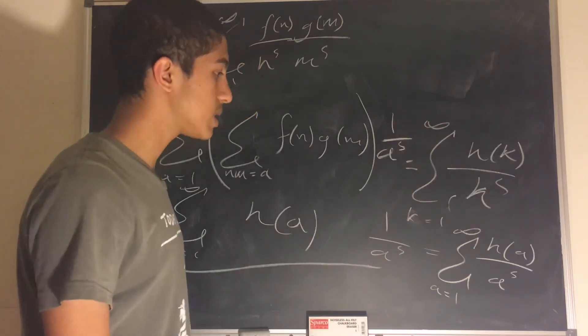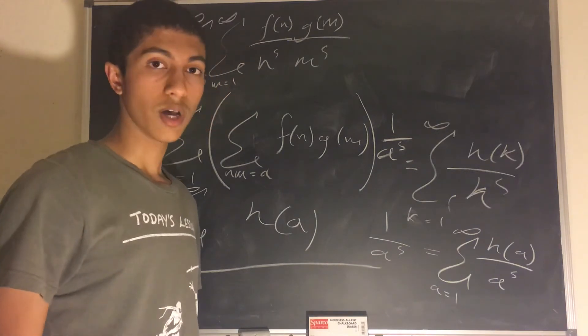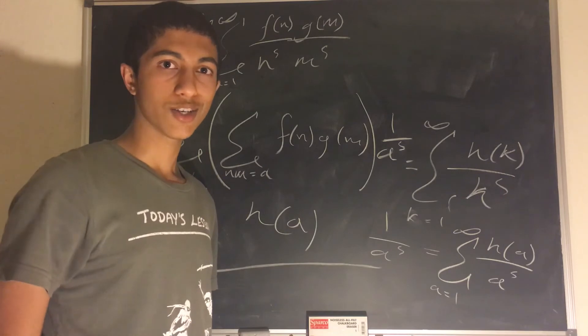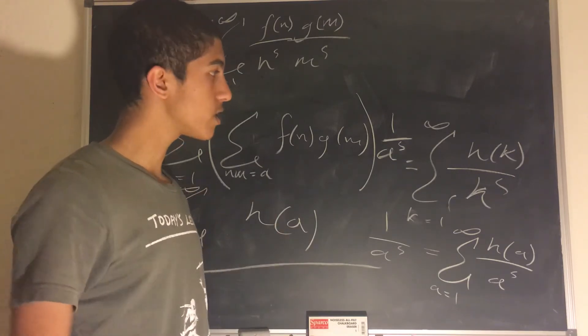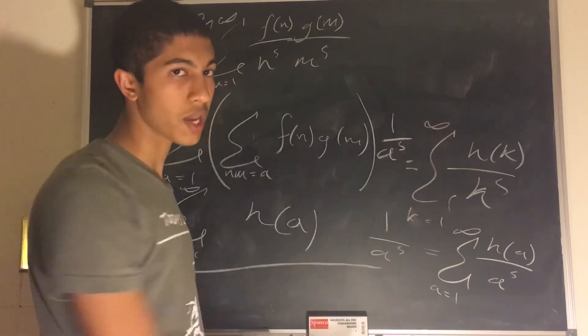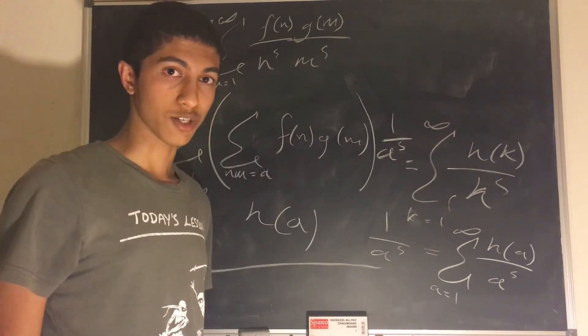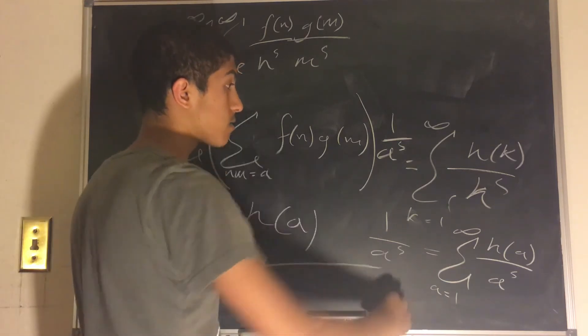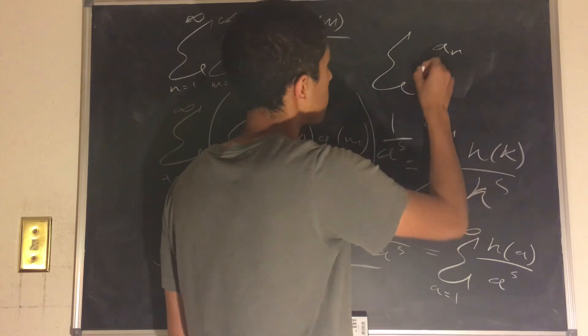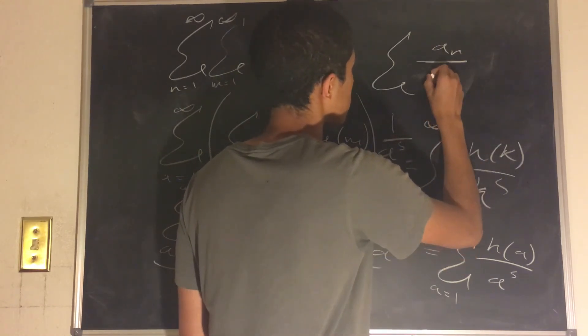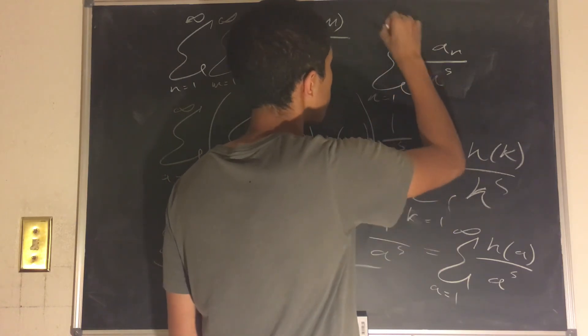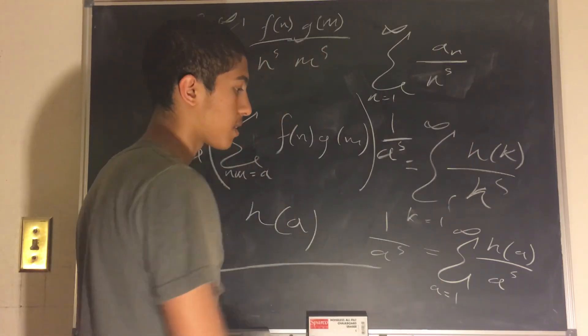We desired the sum from k equals 1 to infinity of h of k divided by k to the s. And they have different indices, but they are the same exact sum. And thus, we have completed the proof that the Dirichlet convolution actually does work with Dirichlet series. So, wonderful. In the next few videos, we will be talking about different arithmetic functions which can replace these h of k, f of k, and g of k functions and other arithmetic functions that can replace the a sub n term in the Dirichlet series.